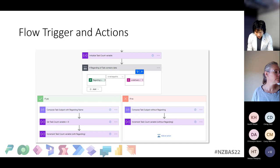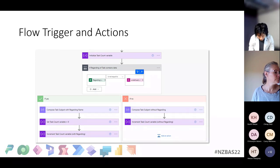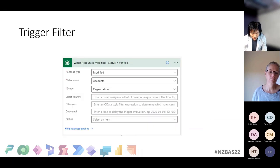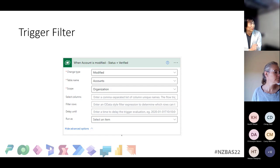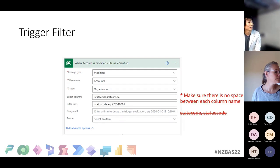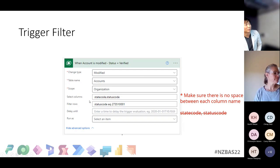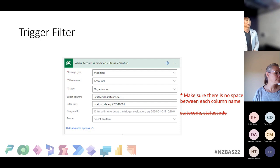When retrieving data from Dataverse, I always recommend using filters. For trigger filters — when triggering on account change, if you don't put any 'Select Columns' or filter rows it will trigger on every single change to that record. My suggestion is to always add the 'Select Columns' so you define which columns trigger this flow. Make sure there's no space between column names after commas — as English speakers we naturally put a space after a comma, but if you do that, the flow will stop triggering with no error message, which is very confusing.